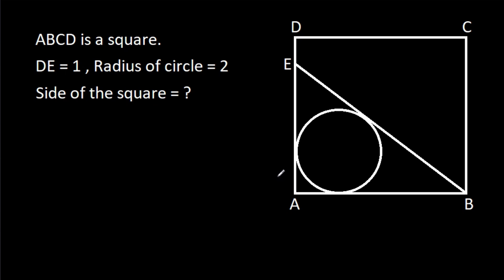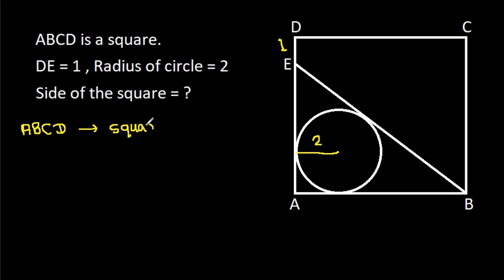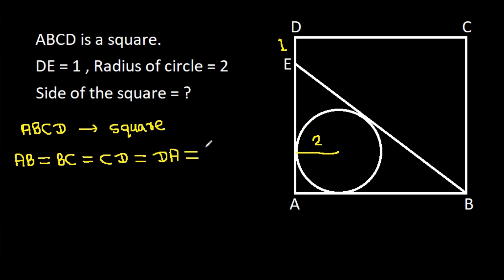In this video, we have been given that ABCD is a square, DE is 1, and the radius of the circle is 2. We have to find the side of the square. Since ABCD is a square, AB equals BC equals CD equals DA. Suppose each side is X.